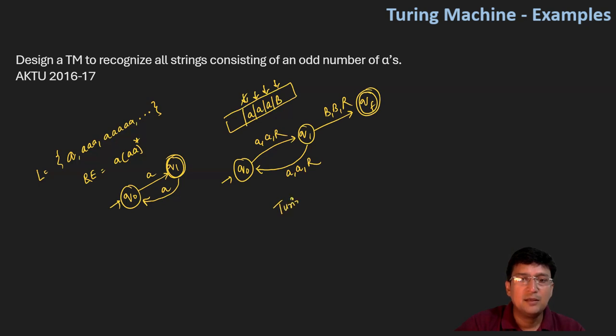You can see that the movement is right. A right, A right, blank blank right. Usually what we have in Turing machine when I get regular languages is my movement right.